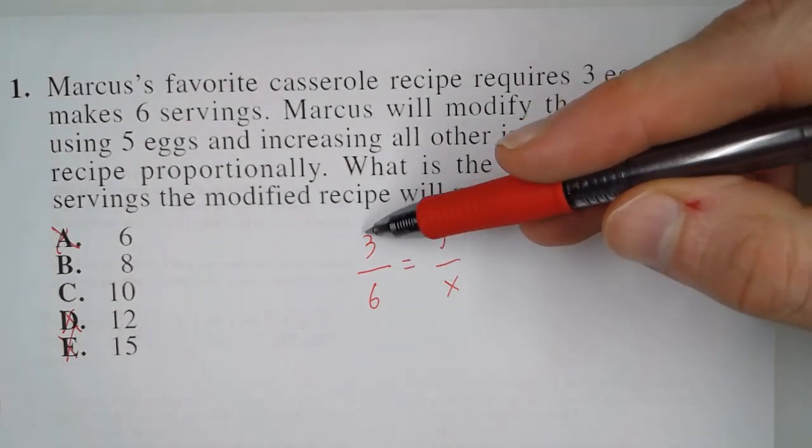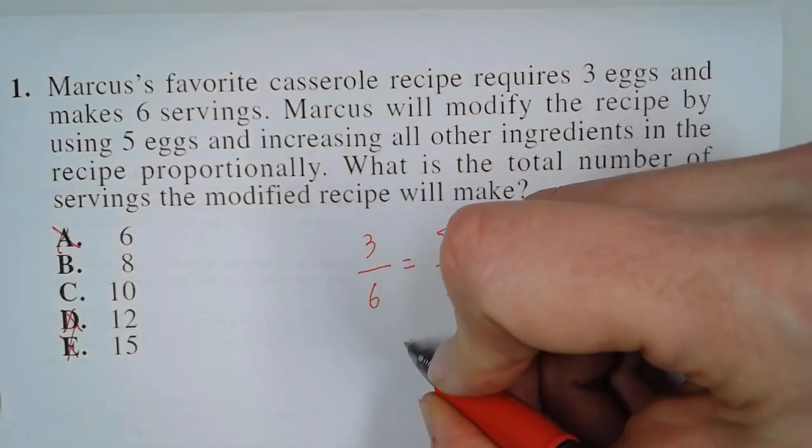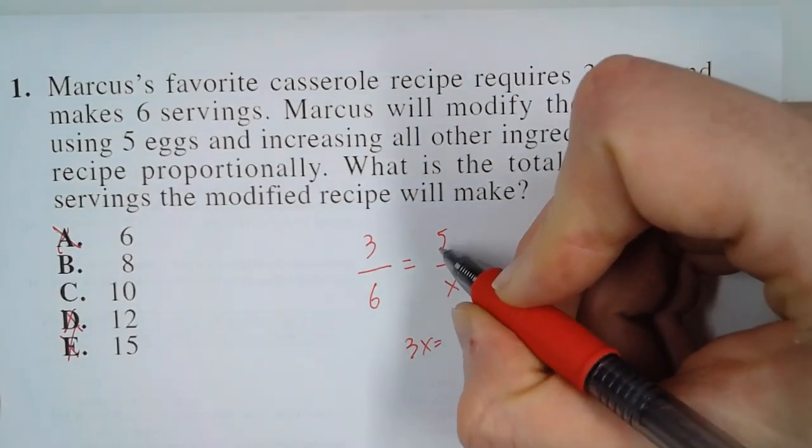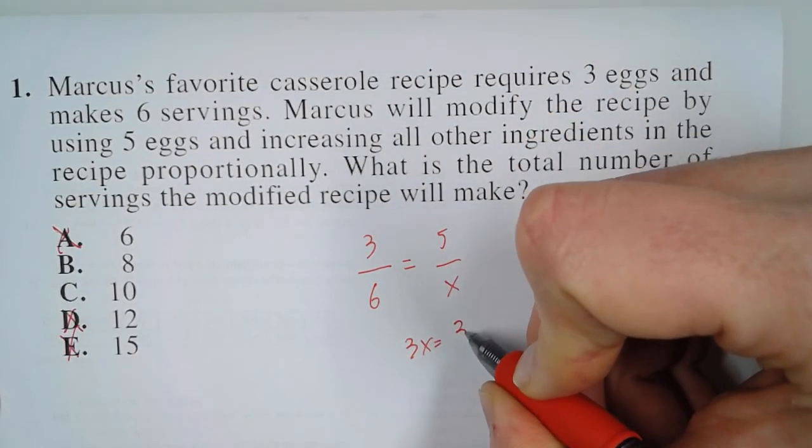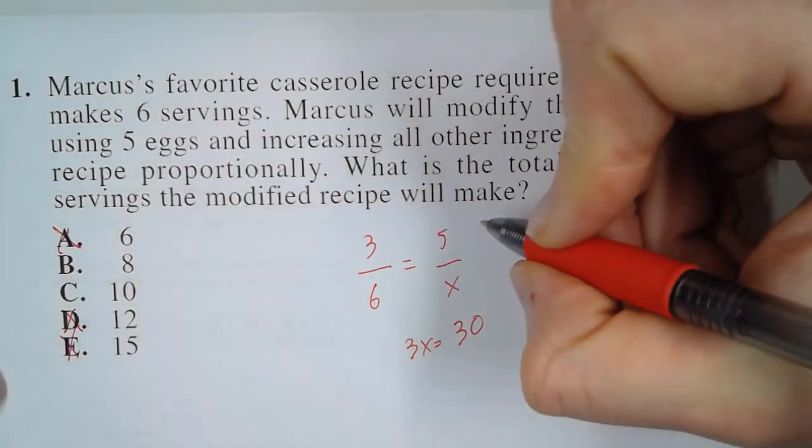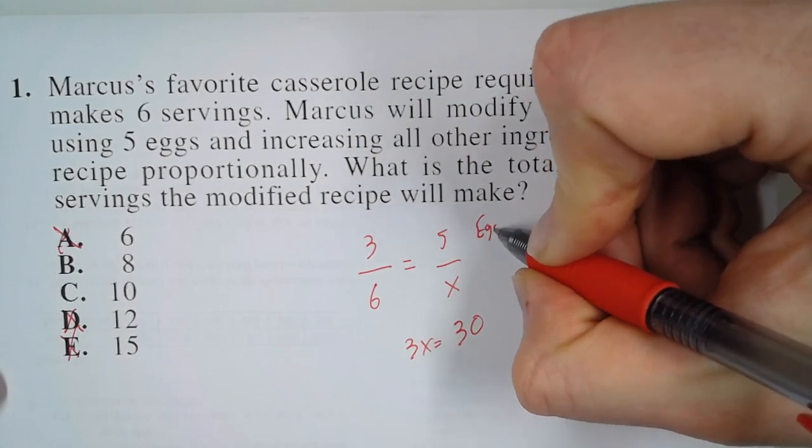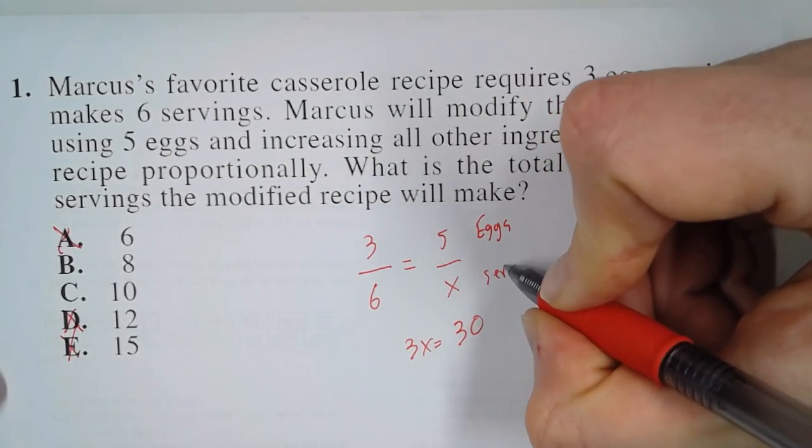So to solve this, we can cross multiply. And so we have three X equals five times six is 30. Now remember, we have to have eggs on top and servings on bottom.